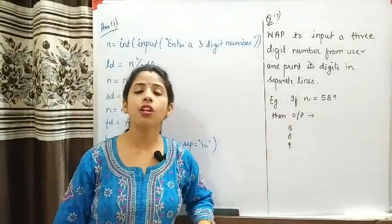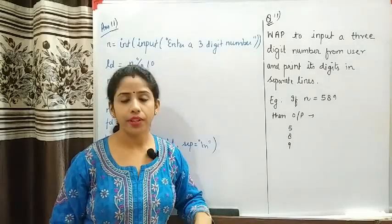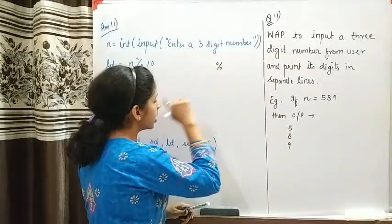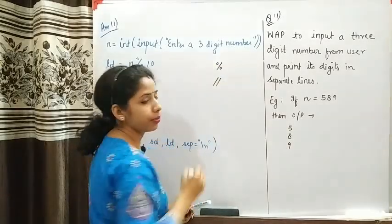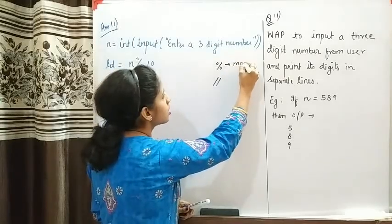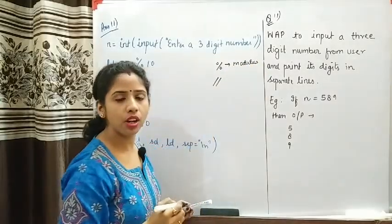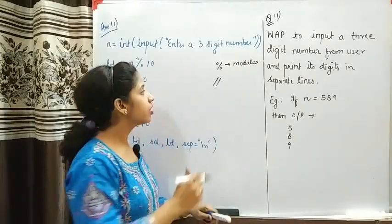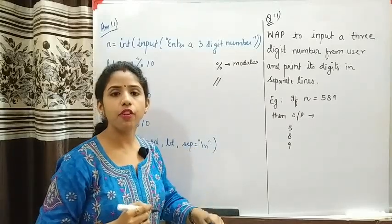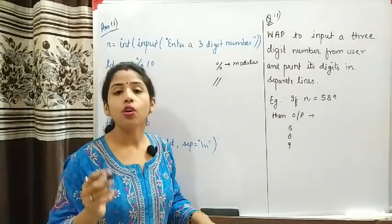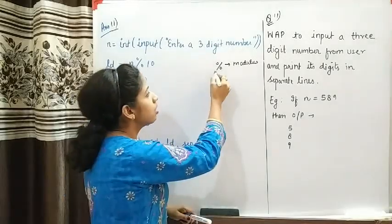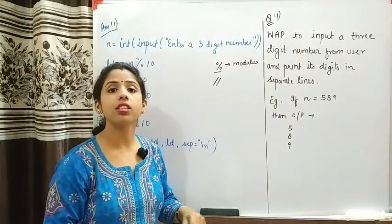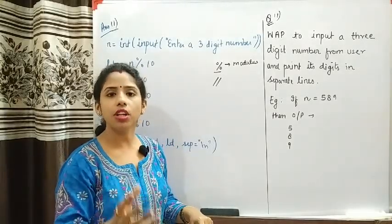For doing this operation you need to know two operators. The first is the modulus operator and the second is the floor division operator. The modulus operator divides the numerator by the denominator and returns the remainder of the division.